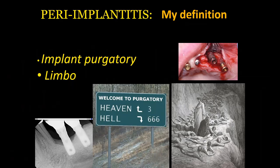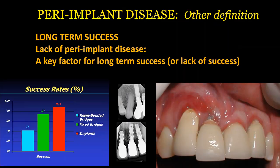My definition of peri-implantitis is implant purgatory. You don't know whether you're going to keep the implant or whether it will survive. Patients are confused; doctors are confused about what to do. You may see peri-implant mucositis not affecting the bone in some areas and affecting it in others. In the old literature, this could be considered a success, even though in clinical practice this would be an embarrassment.